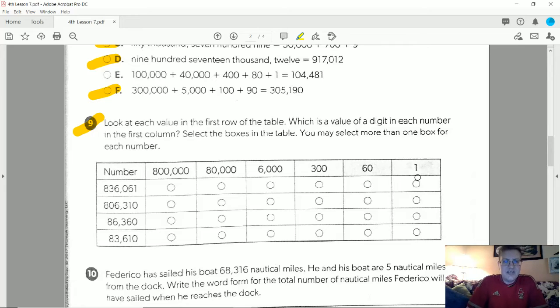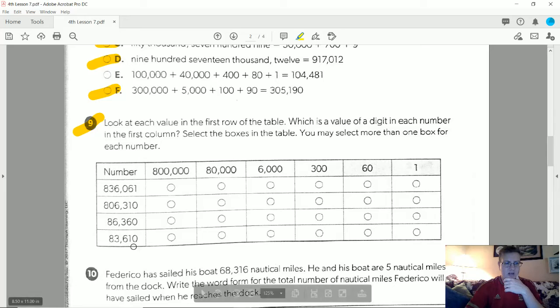Number nine, look at the value of the first row of the table. What is the value of a digit in each number in the first column? They are asking which of these options match up with the place value of a digit for each of these four numbers.